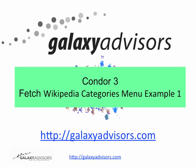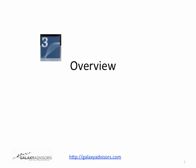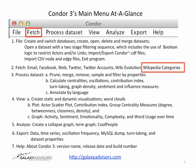Hello and welcome to Galaxy Advisors. The purpose of this video is to provide an example of Condor 3's Fetch Wikipedia Categories menu. This is a slide of Condor 3's main menu at a glance. There are seven menu items, and I've listed here a very short description of the functionality of each menu item.